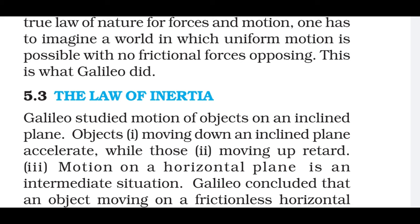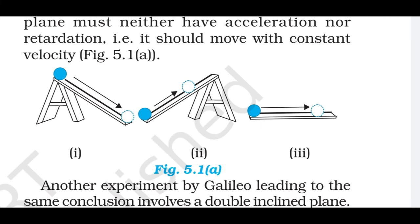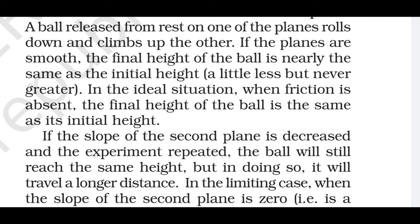The law of inertia. Galileo studied motion of objects on an inclined plane. Objects moving down an inclined plane accelerate, while those moving up retard. Motion on a horizontal plane is an intermediate situation. Galileo concluded that an object moving on a frictionless horizontal plane must neither have acceleration nor retardation — that is, it should move with constant velocity. Another experiment by Galileo leading to the same conclusion involves a double inclined plane. A ball released from rest on one of the planes rolls down and climbs up the other. If the planes are smooth, the final height of the ball is nearly the same as the initial height, a little less but never greater.